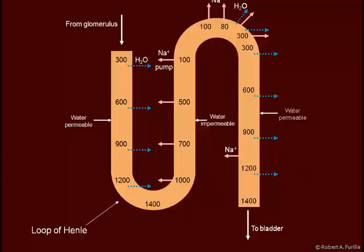Reptiles lack loops of Henle. Their nephrons are straight. The best the reptile can hope to concentrate their urine is isosmotic with plasma. There's no counter-current multiplication occurring in reptiles. They can dilute their urine, but they cannot concentrate it any higher than plasma.